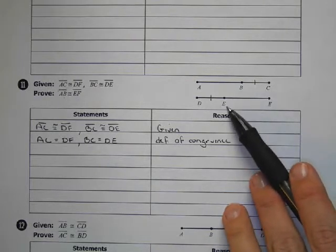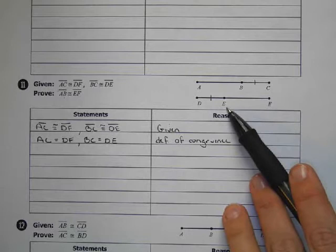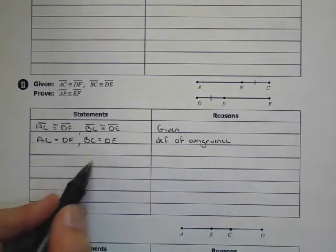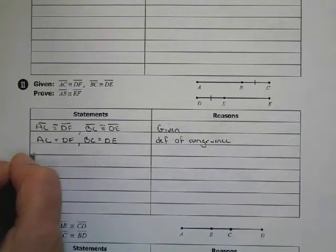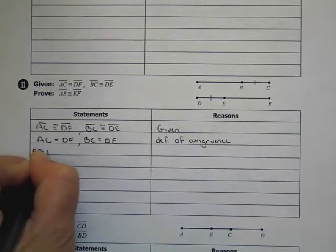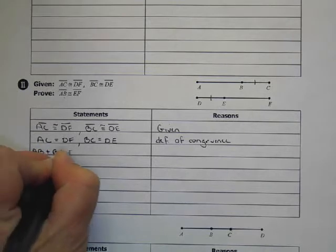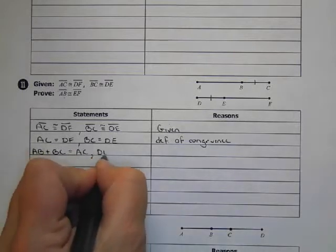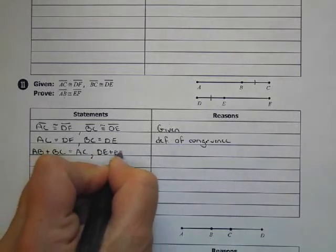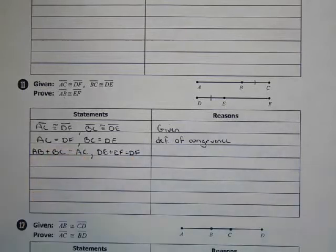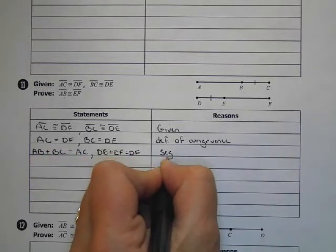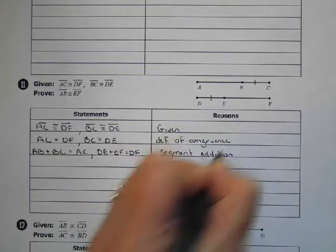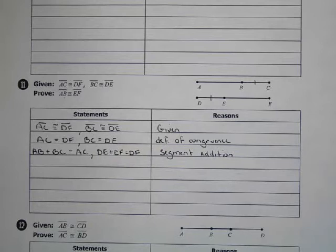So we rely on our segment addition postulate. You can write it all in one step, or we can separate them. So I'm going to write them both together. So AB plus BC equals AC, and DE plus EF equals DF. That's segment addition. And what that does for us is it gets AB and EF into the problem.